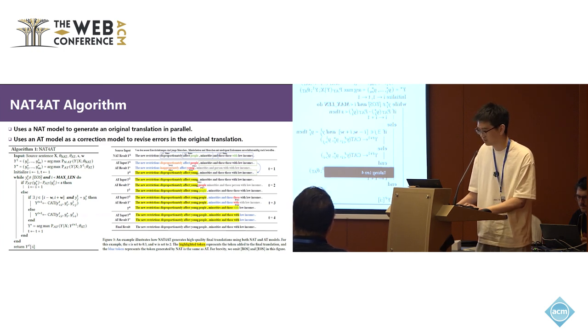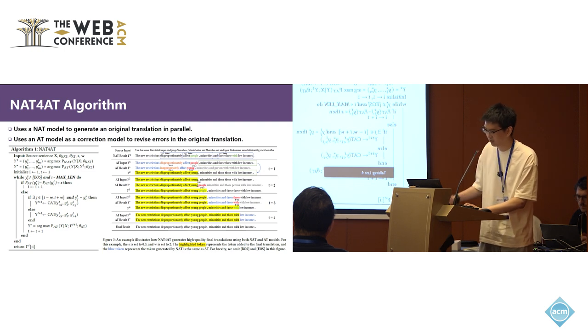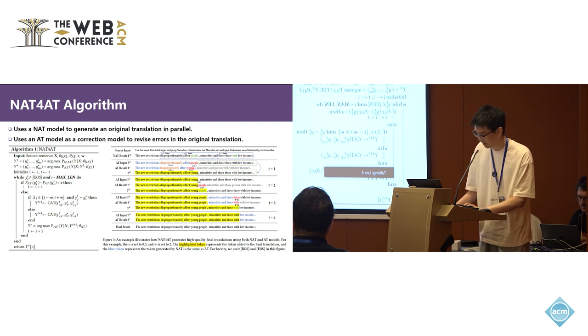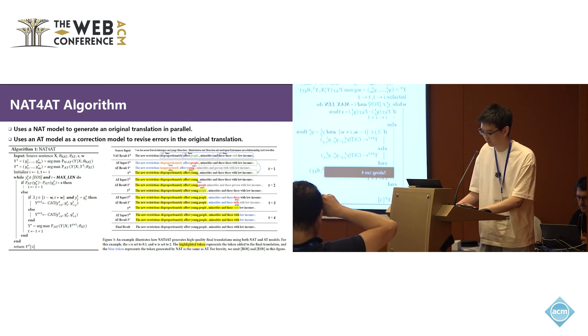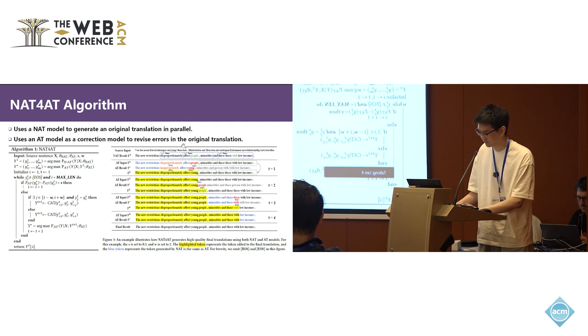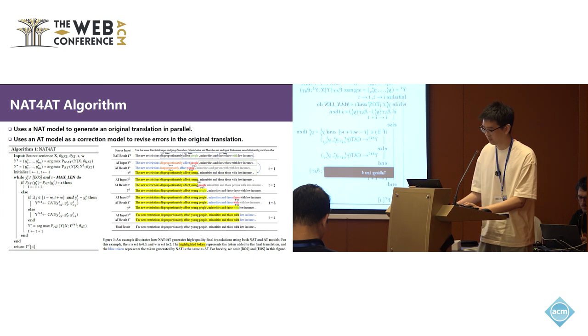The left shows our algorithm flow and Figure 3 shows an example of how NAT for AT works. I will introduce our work based on this example. In this example, our method first uses NAT mode to generate an original result based on the source input. When T equals 1, NAT for AT takes the original result Y1 as the input to an AT decoder and gets the AT result based on greedy search.